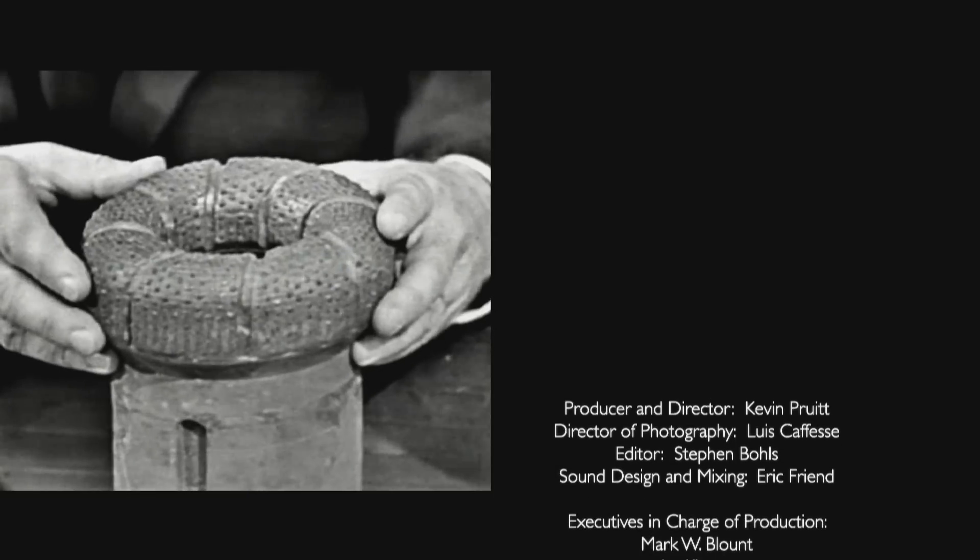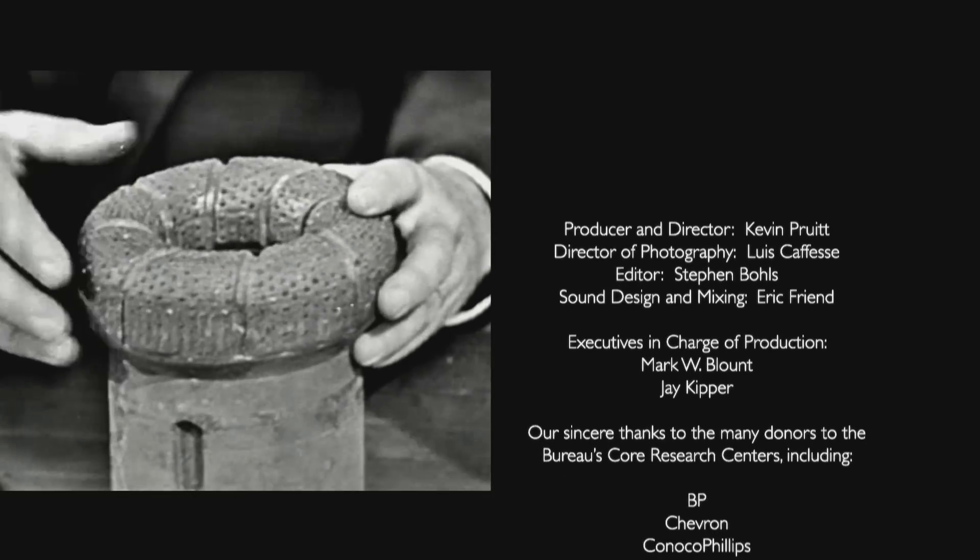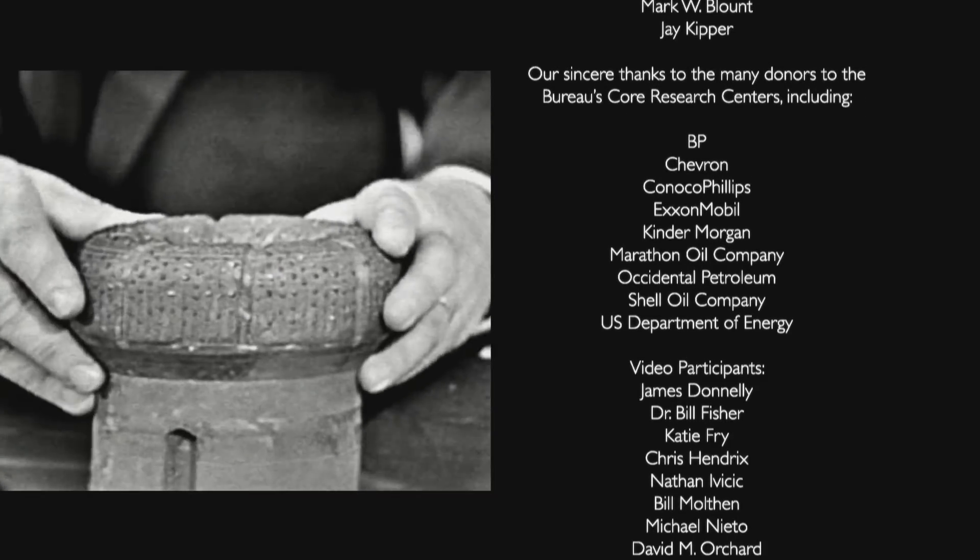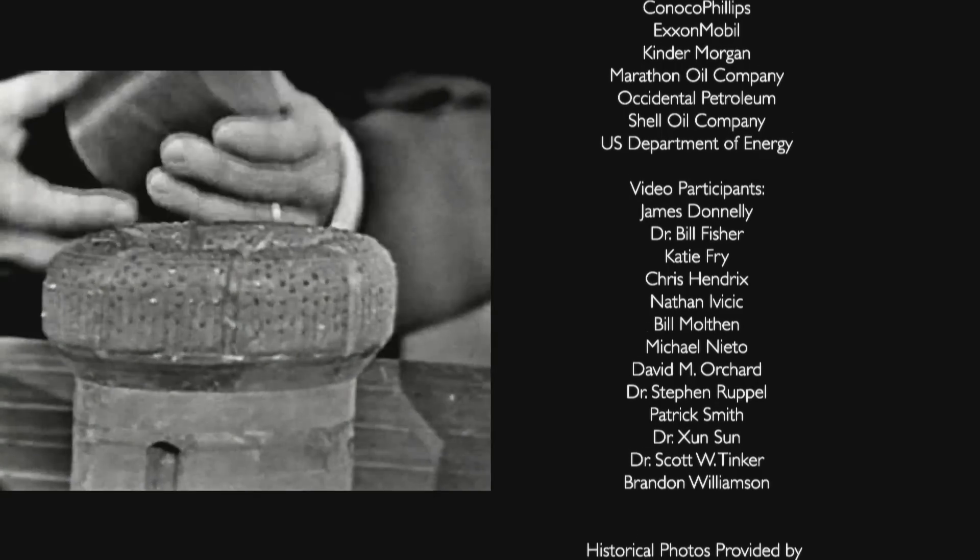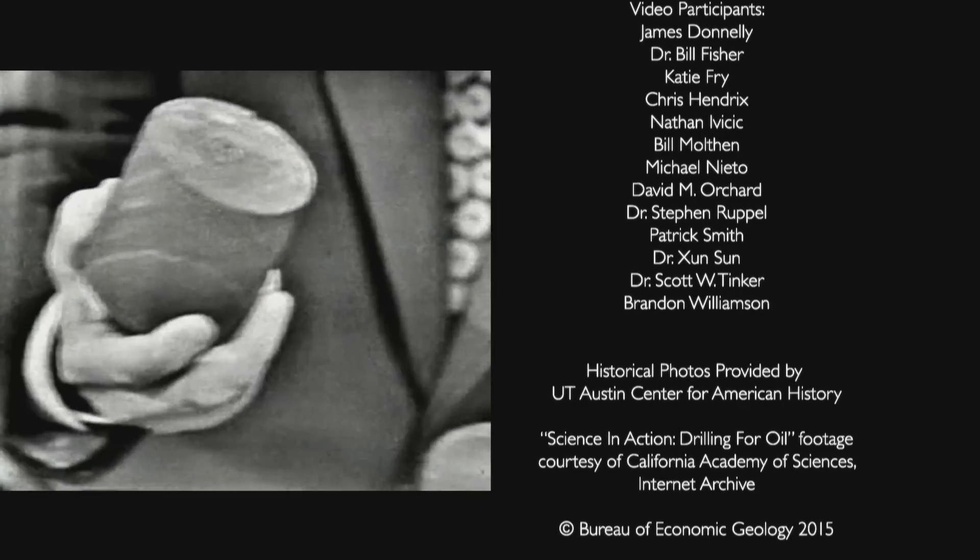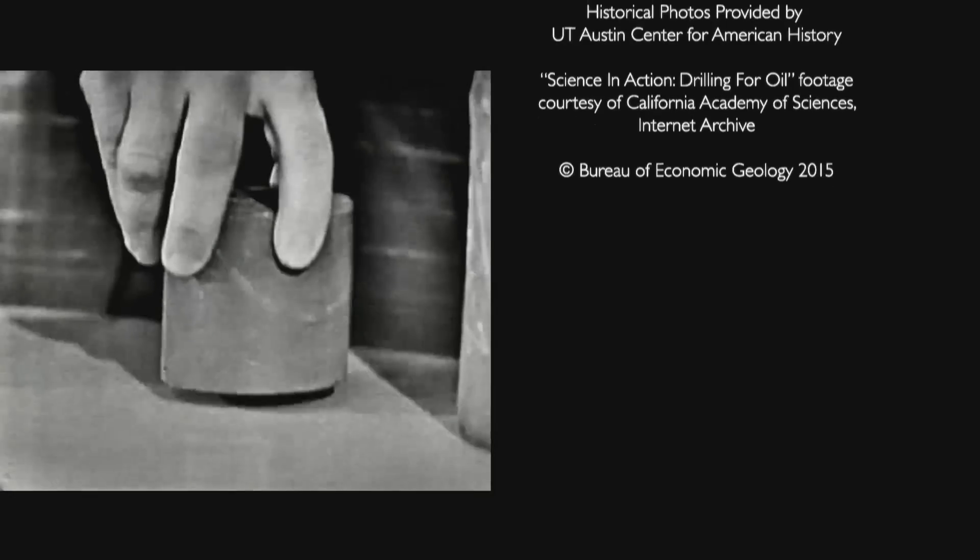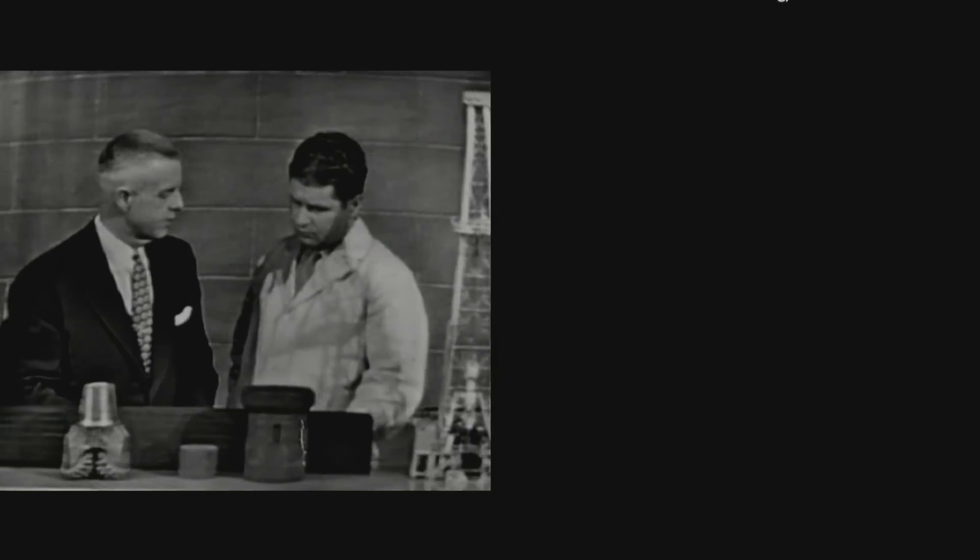This is a special kind of a bit that we call a core bit. And it's used to rotate and cut away a section of the rock through which we're drilling. The section might look like this. This happens to be a core sample of a shale. This is brought to the surface and again used by the geologist to determine the kind of formation in which we're drilling.